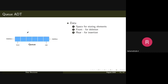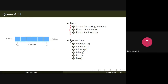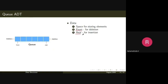Let's discuss the abstract data type — queue ADT. As we have seen in the case of stacks, we'll discuss the queue ADT as having two parts: data and operations. The data required is two pointers — a front pointer and a rear pointer — and space for storing elements. For example, this is a queue of size 6.